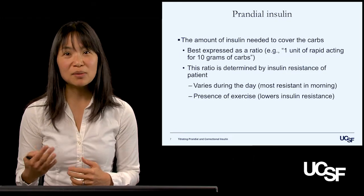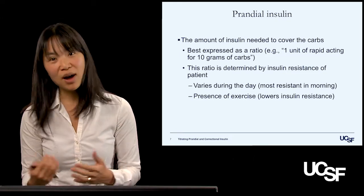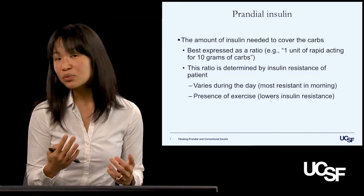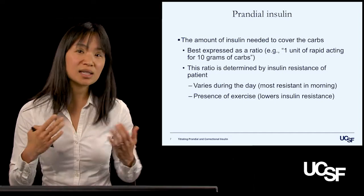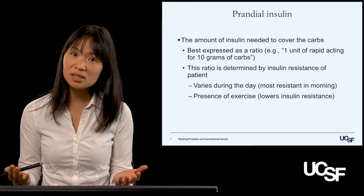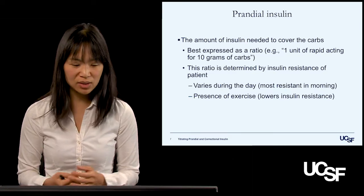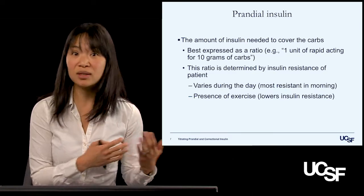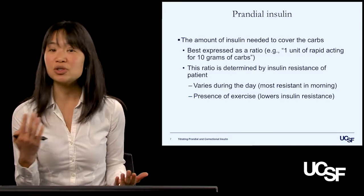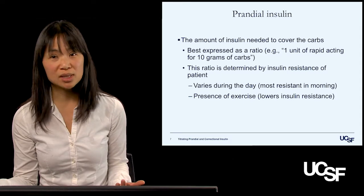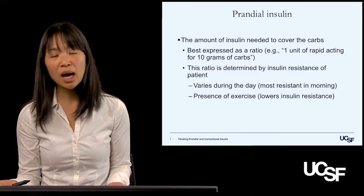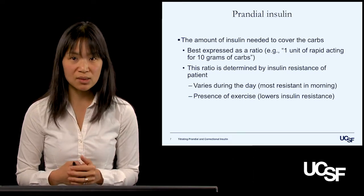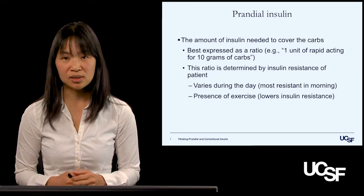This ratio is determined largely by the insulin resistance of the patient. Insulin resistance does not stay constant over a 24-hour period, so the ratio may be different depending on the time of day. People are traditionally more resistant in the morning, and it will change in the presence of exercise, which lowers insulin resistance.